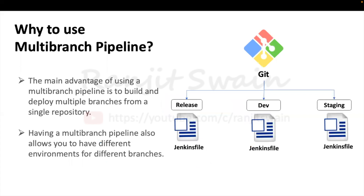The main advantage of using a multi-branch pipeline is to build and deploy multiple branches from a single repository. It also allows you to have different environments from different branches. As you can see in this diagram, we have a release branch, a dev branch, and a staging branch. If you want to work on the development platform, you can use the dev branch. Similarly, for staging, you can use the Jenkinsfile of that particular branch.